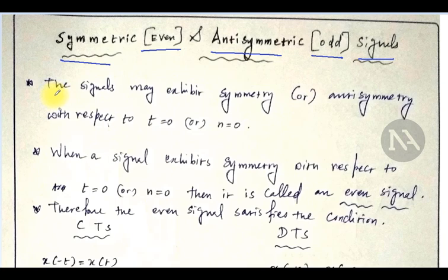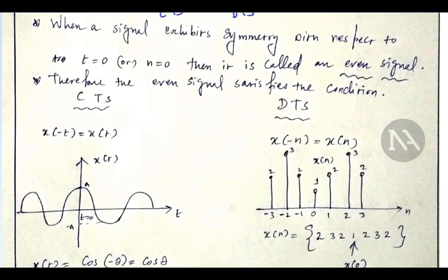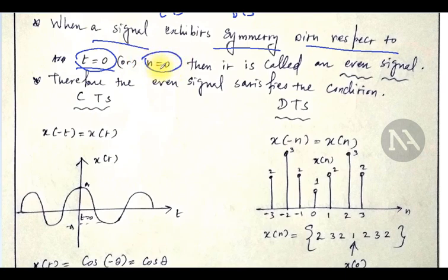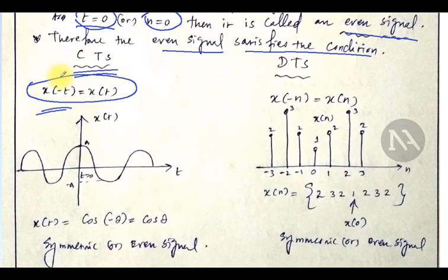A signal may exhibit symmetry or antisymmetry with respect to t equals 0 for a continuous time signal, or n equals 0 for a discrete time signal. When can a signal be said to be a symmetric signal? A signal exhibits symmetry with respect to t equals 0 for a continuous time signal, then it is an even or symmetric signal. An even signal satisfies the condition: x of minus t should be equal to x of t. This is the condition for symmetry for a continuous time signal.